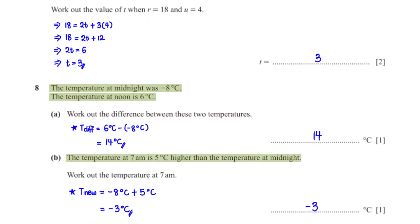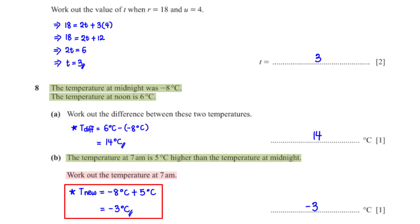The temperature at 7 am is 5 degrees Celsius higher than the temperature at midnight. Work out the temperature at 7 am. To get the temperature at 7 am, we add 5 degrees Celsius to negative 8 degrees Celsius. This gives us negative 3 degrees Celsius.